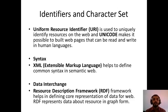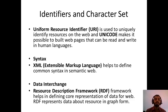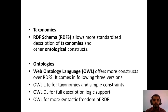The next one is data interchange. In data interchange we have the Resource Description Framework, RDF. RDF is a framework that helps in defining the core presentation of data for the web. RDF represents data about resources in graph form. With reference to taxonomies, RDF schemas or RDFS allows more standard description of taxonomies and other ontological structures. Taxonomy refers to the different types, and ontology means how a particular thing is implemented.